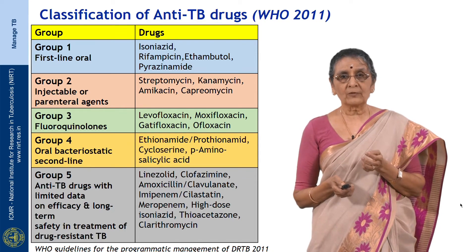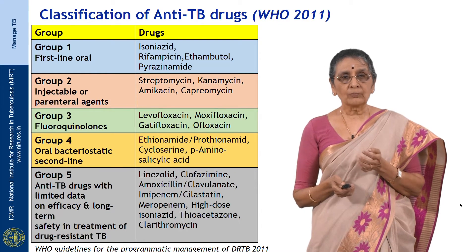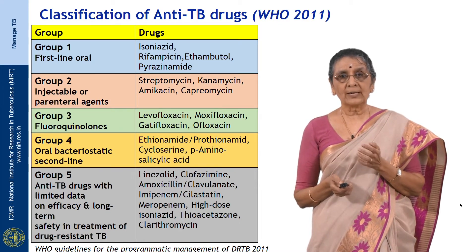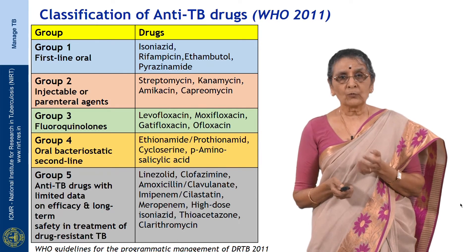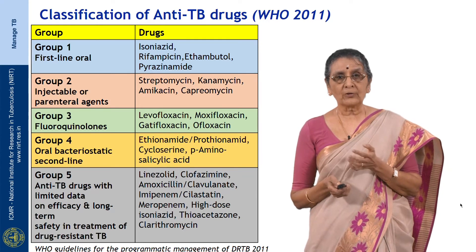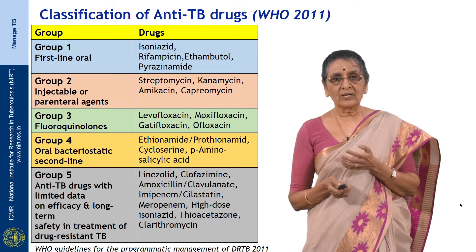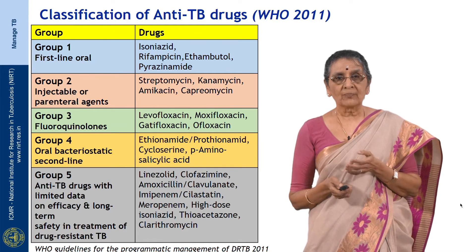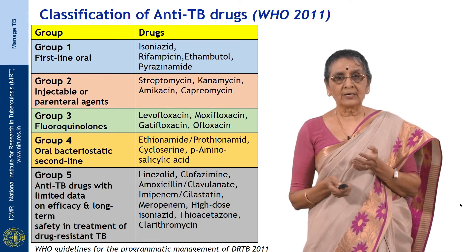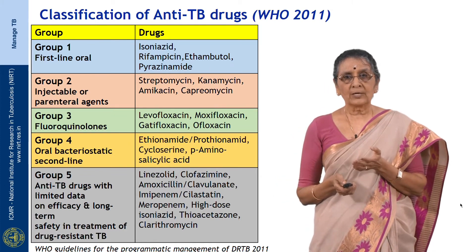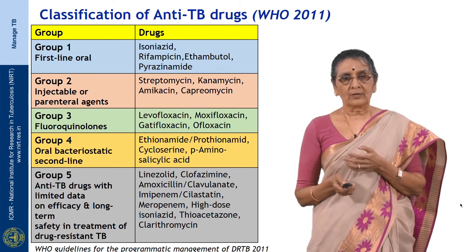Group 2 consists of injectable drugs like streptomycin and kanamycin. Group 3 consists of fluoroquinolones, mainly levofloxacin, moxifloxacin, gatifloxacin, and ofloxacin. Group 4 consists of fully bacteriostatic second-line drugs like ethionamide and cycloserine. Group 5 includes other anti-TB drugs with limited efficacy data, such as linezolid and clofazimine.